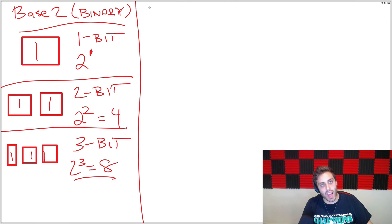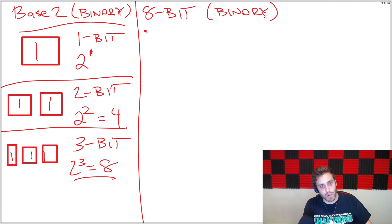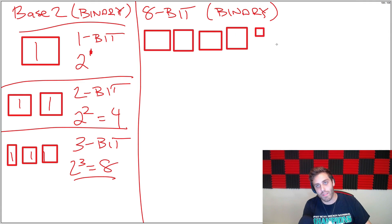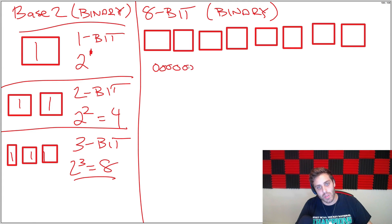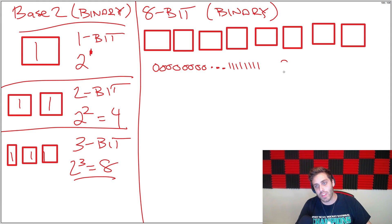So then let's look at an 8-bit number in binary. There will be 1, 2, 3, 4, 5, 6, 7, 8 different slots. The range of numbers that an 8-bit number can encode goes from 00000000 all the way up to 11111111. This is the range of numbers that an 8-bit binary number can encode, and this would be 2 to the 8th, or 256 different combinations in this range.